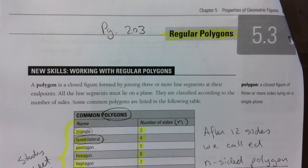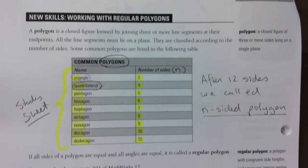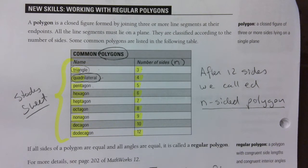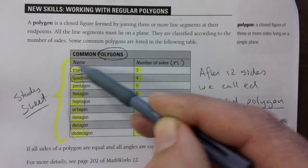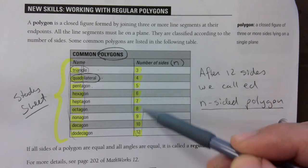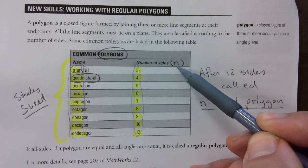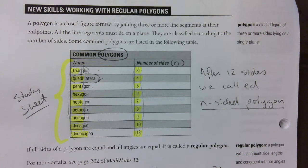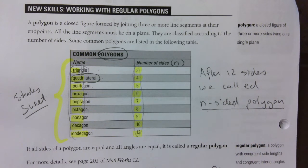Just a quick glance through page 203 again — I would strongly encourage you to have these prefixes associated with a number of sides. We call the number of sides 'n'. After these named ones, we just call them n-sided polygons, so 13-sided, 14-sided, 50-sided — it doesn't matter.